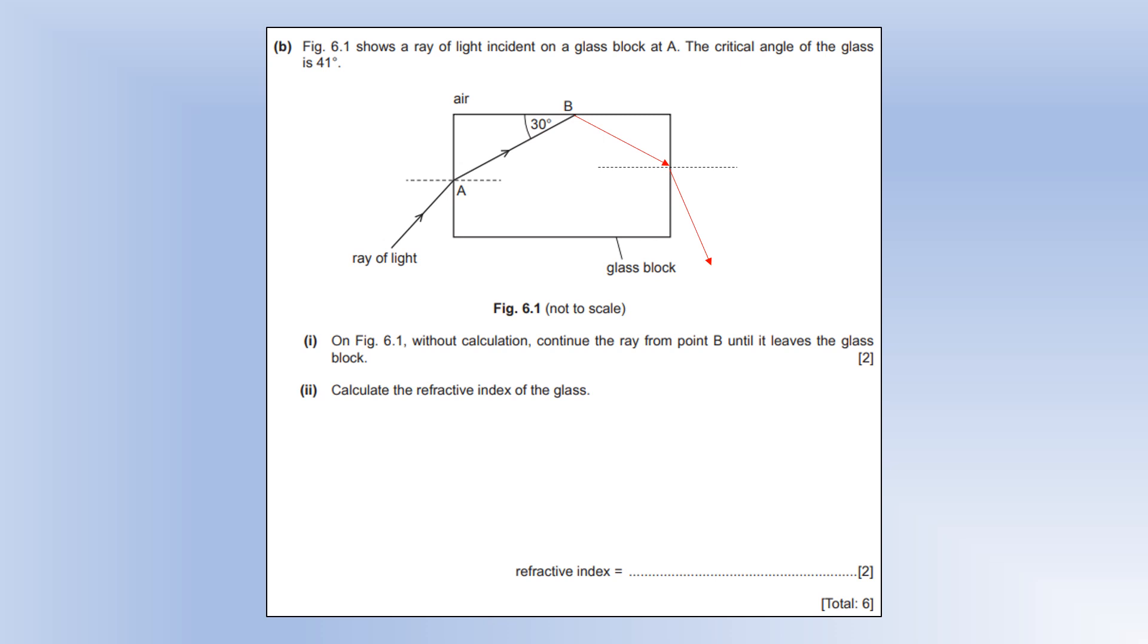Calculate the refractive index of glass. I'm going to use the critical angle to do it. We know when the angle of incidence is equal to the critical angle, the angle of refraction is 90 degrees because it goes along the boundary. We know it's trying to go into air, so we know n2 is 1. So we can then essentially get this equation, which we can rearrange to calculate n1, and we get a very typical refractive index for glass.